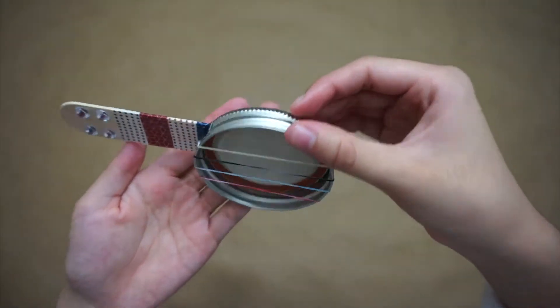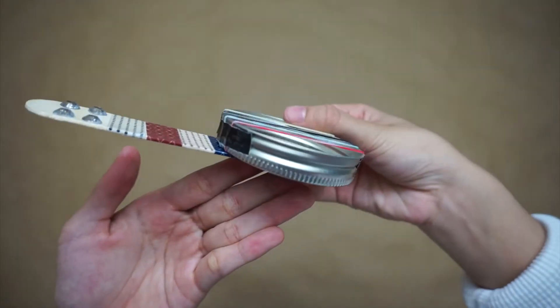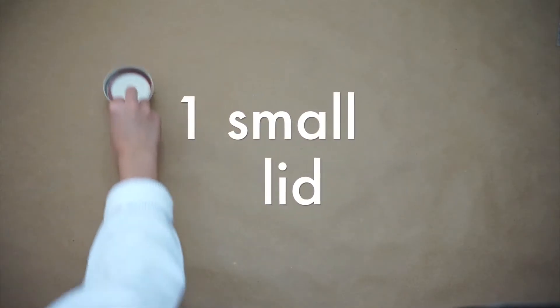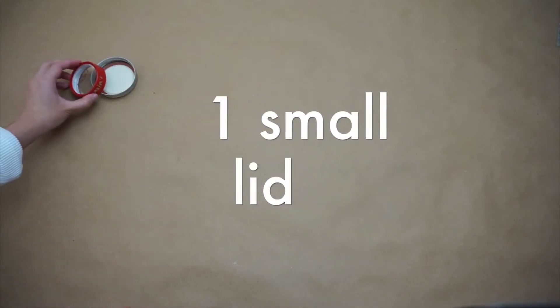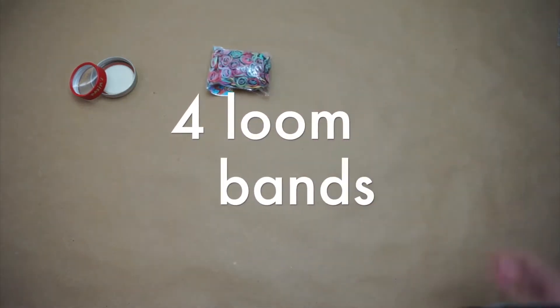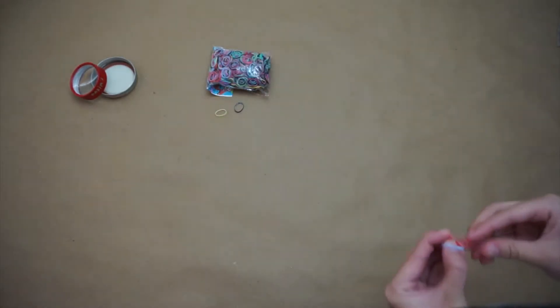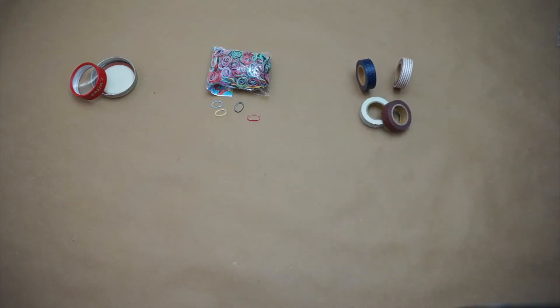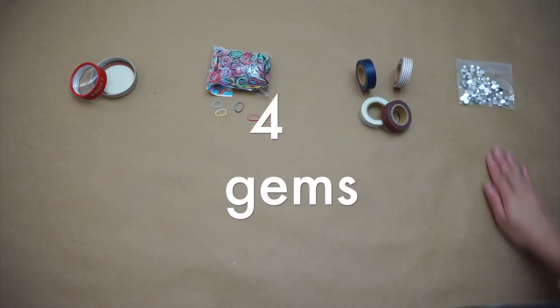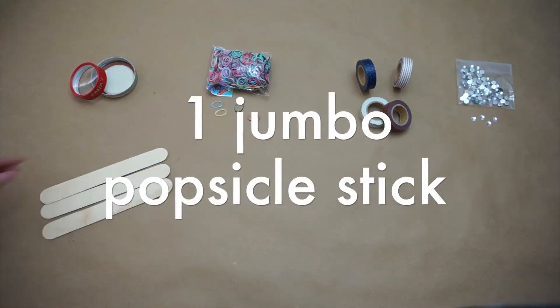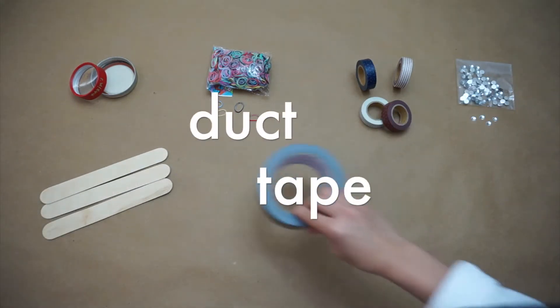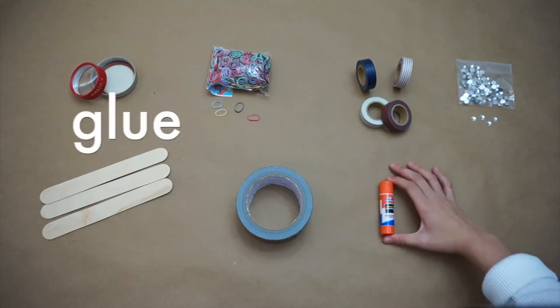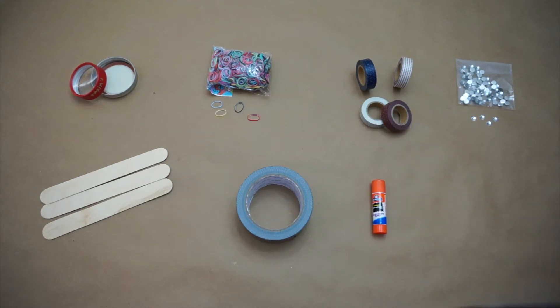To begin, let's start with the supplies we'll need. We're going to use one small lid, four loom bands, washi tape, four gems, one popsicle stick, duct tape, glue, and lastly scissors.